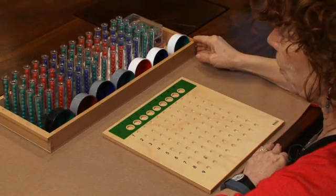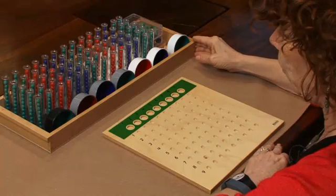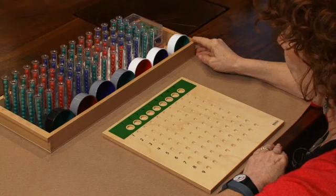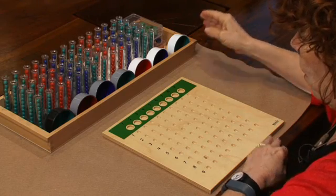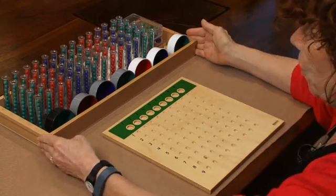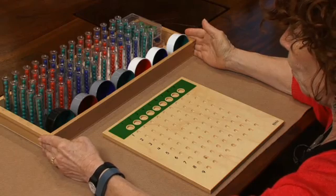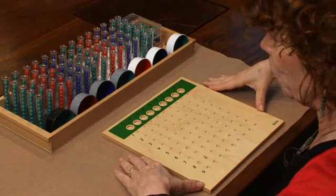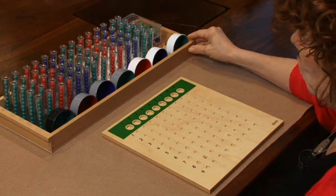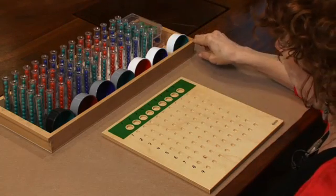This is the introduction to test tubes for division, and we'll be doing a problem with a one-digit divisor. For doing division, we're using this material, which are called the test tubes, or some people call them racks and tubes, and I'd like to introduce you to the parts of this work.